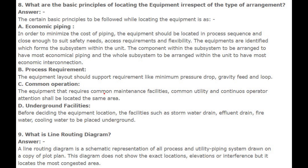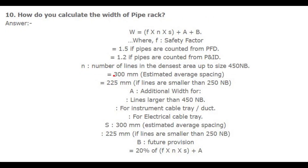Number 9: What is a line routing diagram? Answer: A line routing diagram is a schematic representation of all process and utility piping systems drawn on a copy of the plot plan. This diagram does not show the exact locations, elevations, or interference, but it locates the most congested area.